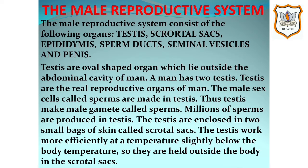Testes are the oval shaped organs which lie outside the abdominal cavity of a man. A man has two testes. Testes are the real reproductive organs in man. The male sex cells or male gametes called sperms are made in testes. Thus testes make male gametes called sperms. Millions of sperms are produced in the testes.